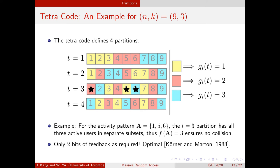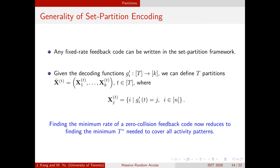It's important to note that the set partitioning framework is not restrictive. Any set of deterministic collision-free decoders mapping from a set of T symbols to a slot can be written in the set partition framework with T partitions. The key point is that this framework is simply a different way to view the problem, and it gives us a single quantity to minimize — T, the number of partitions — in order to minimize the feedback rate for zero-collision feedback.